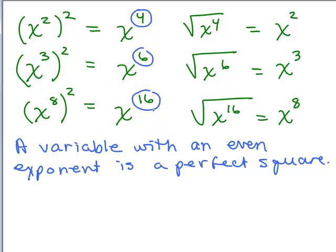A variable with an even exponent is a perfect square. X to the fourth, x to the sixth, x to the sixteenth are all perfect squares, so when we take the square root we don't have a radical symbol anymore. The square root of x to the fourth is x squared, of x to the sixth is x cubed, and of x to the sixteenth is x to the eighth. The pattern: taking the square root halves the exponent. So the square root of m to the tenth is m to the fifth.